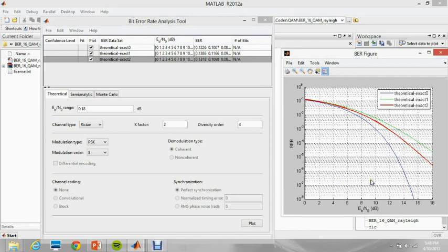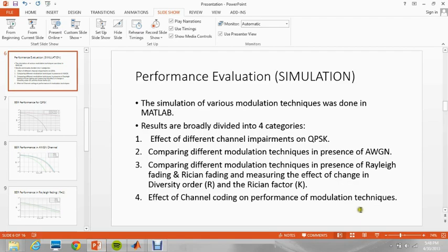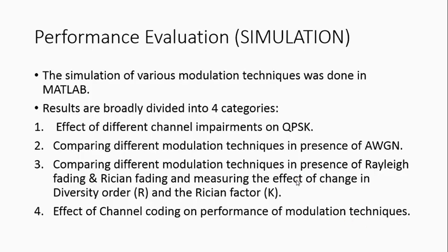Now I'll explain the other results in the PowerPoint presentation. The results are broadly categorized into 4 types: firstly, the effect of different channel impairments on QPSK; secondly, comparing different modulation techniques in presence of AWGN channel; thirdly, comparing different modulation techniques in presence of Rayleigh and Rician fading and measuring the effect of change in diversity order R and Rician factor K on performance; and lastly, the effect of channel coding on the performance of different modulation techniques.